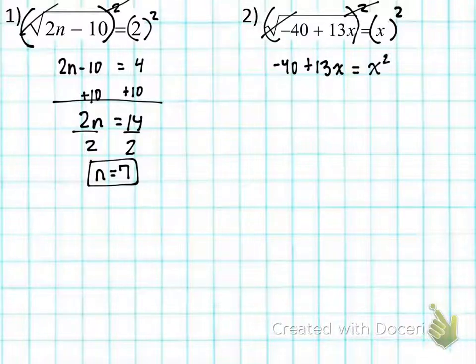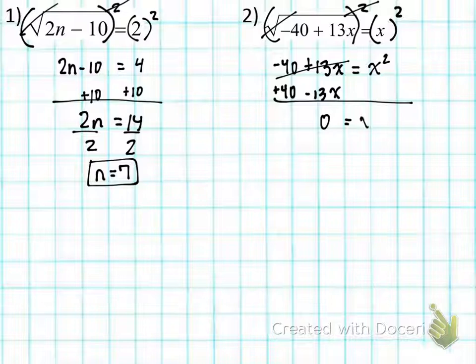So now that I see x squared, x squared is the largest exponent, so I know that since the exponent is 2, there's going to be two answers. So I want to move everything over to one side and factor it if possible. So I'm going to add 40 to both sides and subtract 13x to both sides. When I do that, these go away, leaving just 0 on the left side. On the right side, I have x squared minus 13x plus 40.